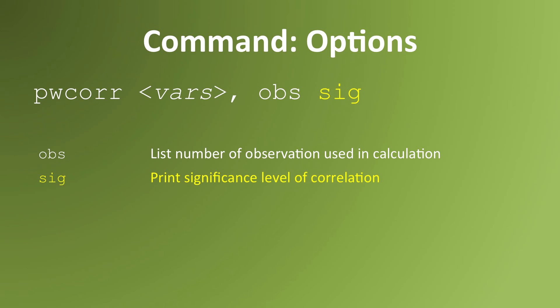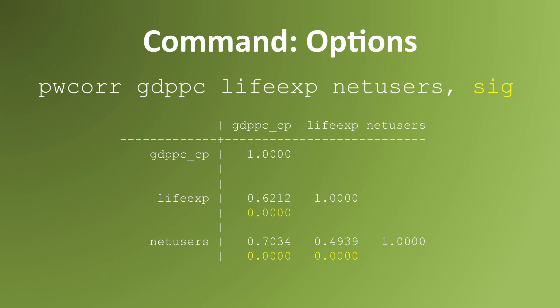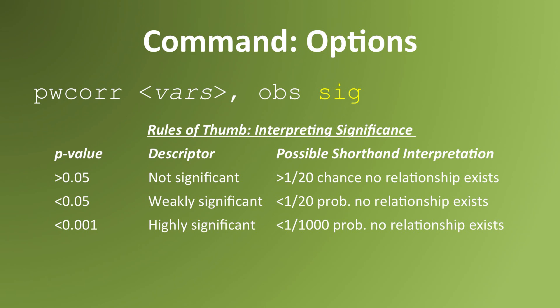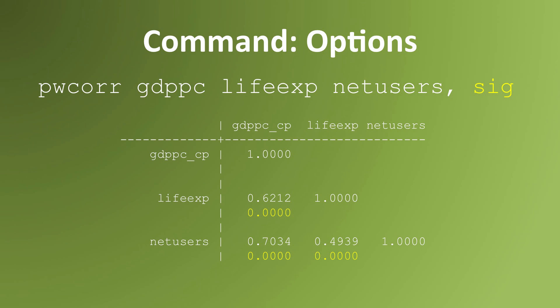The SIG option asks Stata to give the results of a significance test that the correlation is non-zero. When you use this option, you're looking for a significance score that's less than 0.05. In this case, all of these relationships score below 0.05, suggesting that they are all significant. This means we predict there's a high likelihood that all of these variables have non-zero relationships.